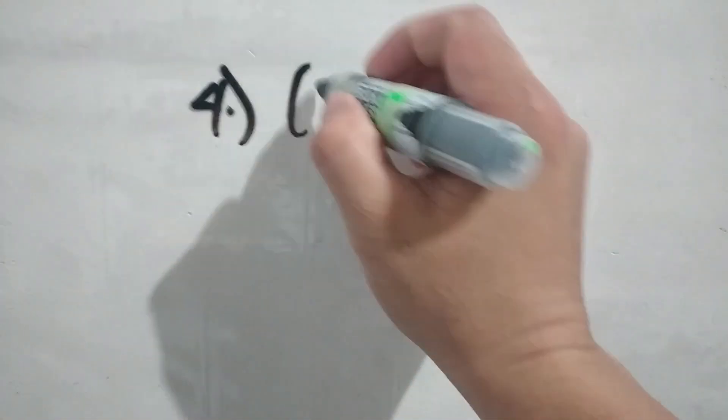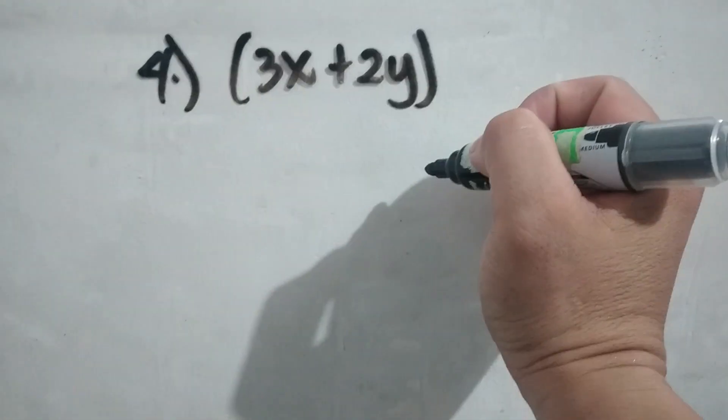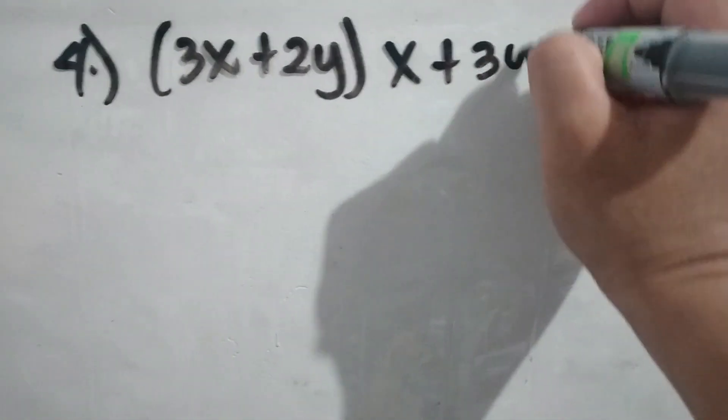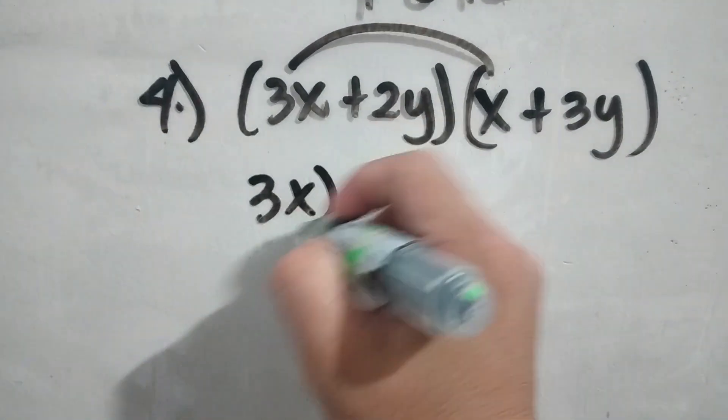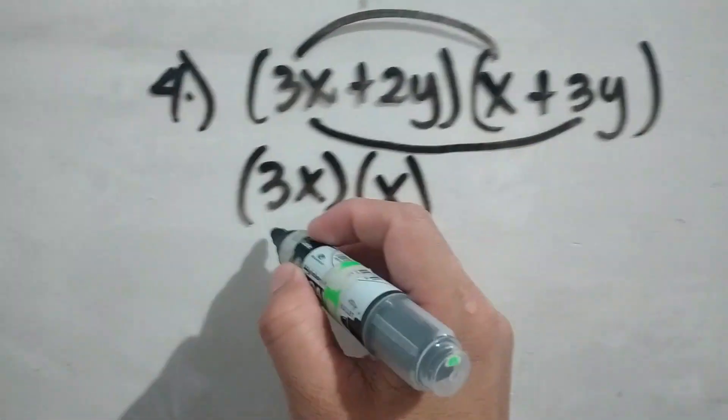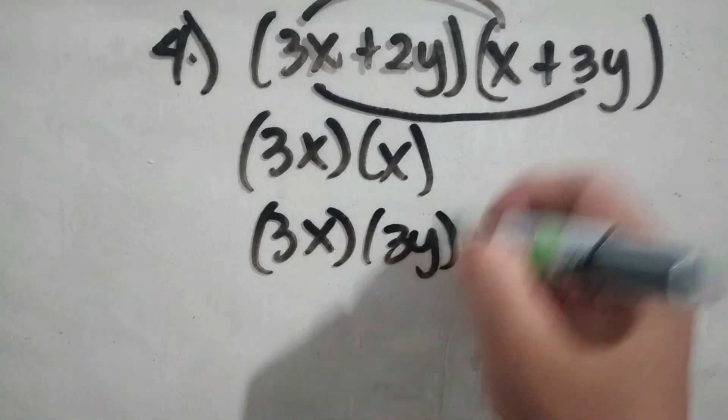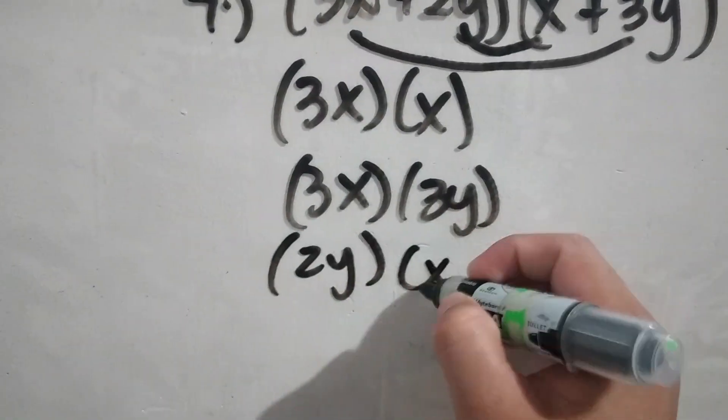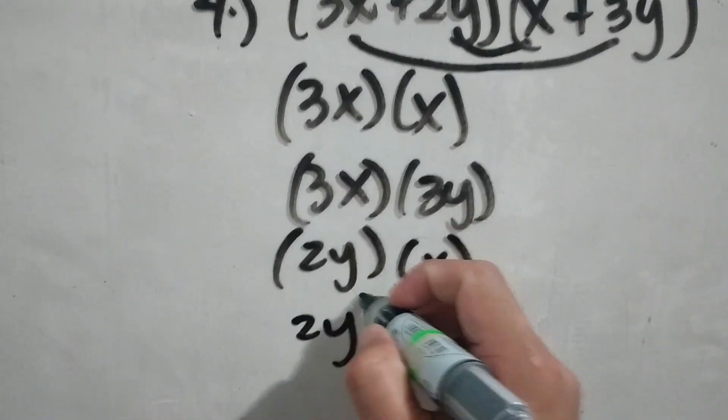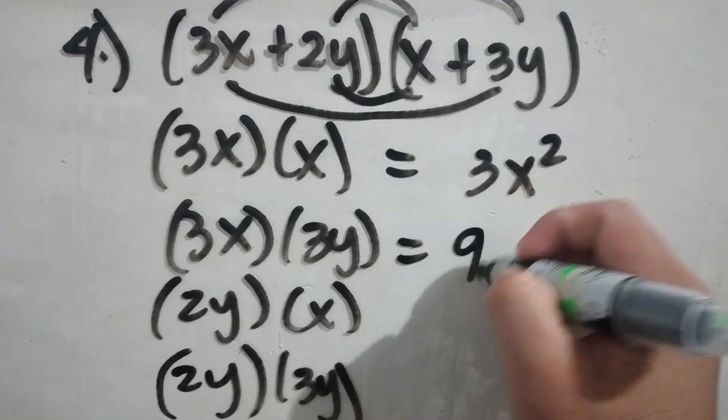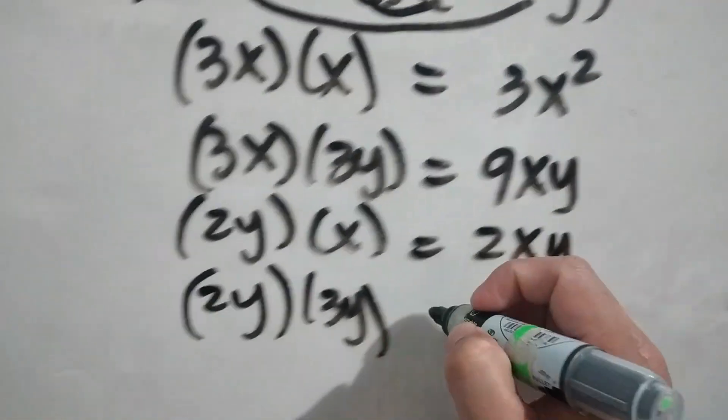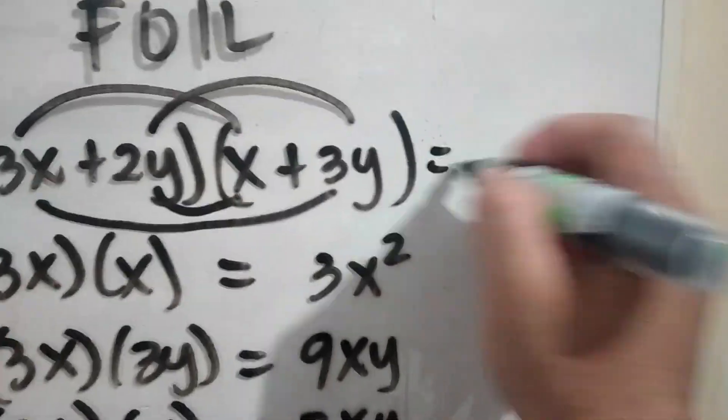Number four. 3x plus 2y, times x plus 3y. So again, this is applying the FOIL method. Multiply the first term. Multiply the outer terms. Multiply the inner terms. Multiply the last term. And combine the similar terms. And we have the product.